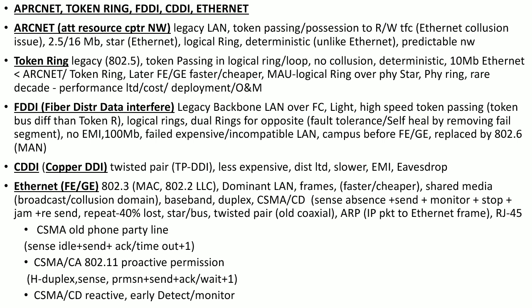Carrier Sense Multiple Access with Collision Avoidance or CSMA/CA is used by 802.11, that is wireless LAN. It is more proactive than CSMA/CD used by Ethernet, because it gets permission to transmit its signal before transmitting. It is used because wireless media is half-duplex — only one device can send at a time, although devices can send in both directions but only one at a time. It senses the media for idleness, and if idle gets permission to send the signal, then sends it and waits for an acknowledgement; if not received it waits for an idle period and starts from step one.